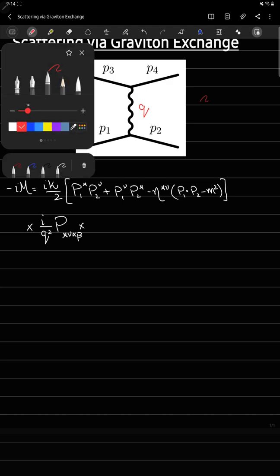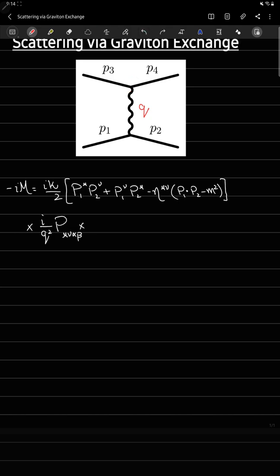Coming back to this vertex, we have particles with momentum p3 and p4, so I'll have iota kappa over 2 and p3 alpha p4 beta plus p3 beta p4 alpha minus eta alpha beta (p3 dot p4 minus m squared). That's all.